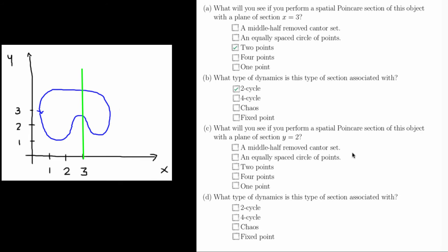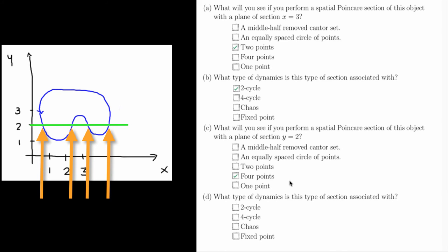However, if we instead take a spatial Poincaré section at y equals 2, so here, we will get four points here, here, here, and here. So the answer to Part C is four points. And similarly, just as two points result in a two cycle, four points on a Poincaré section is defined as a four cycle.